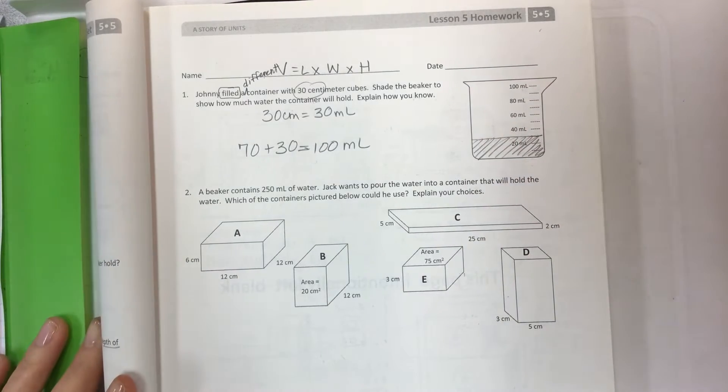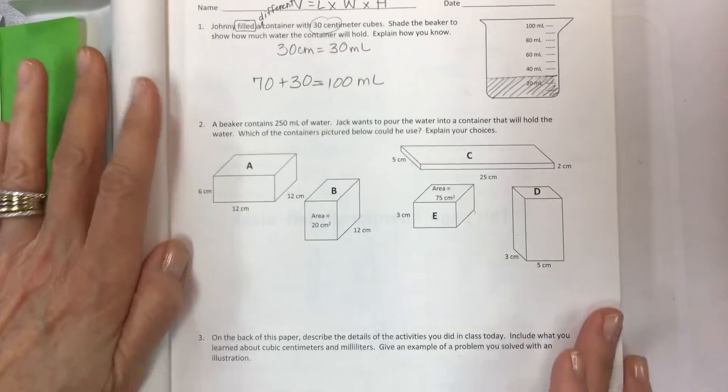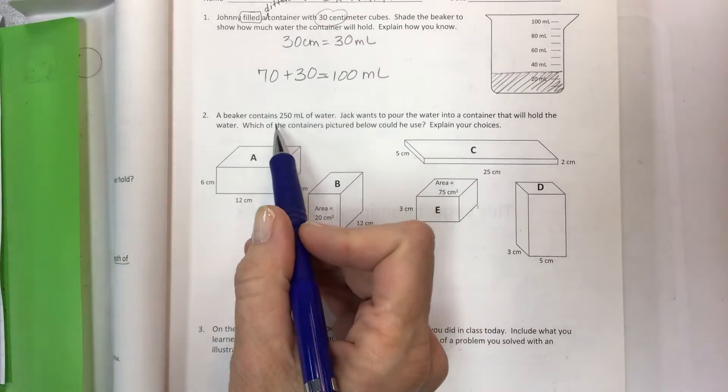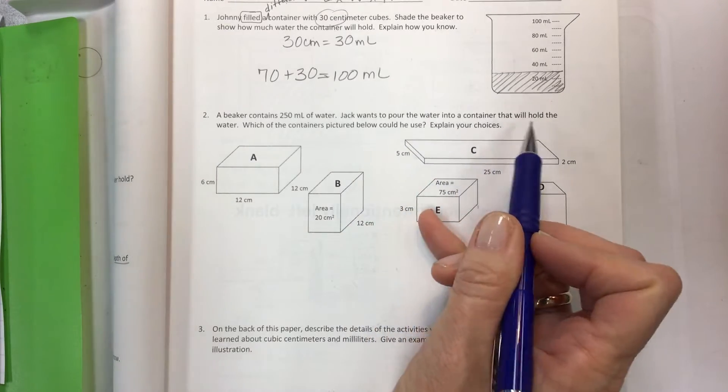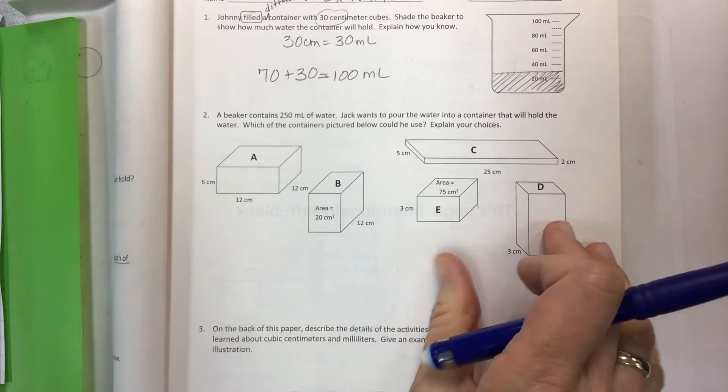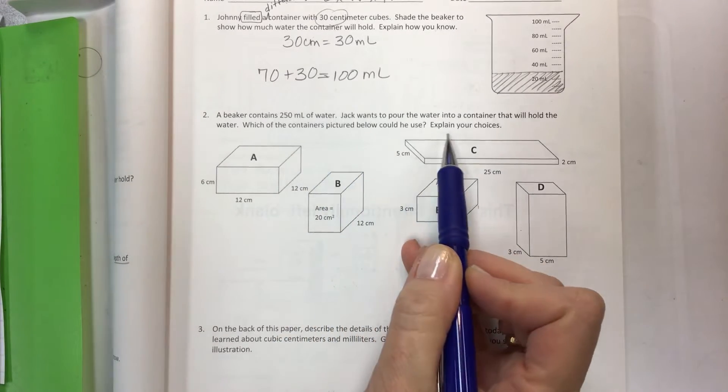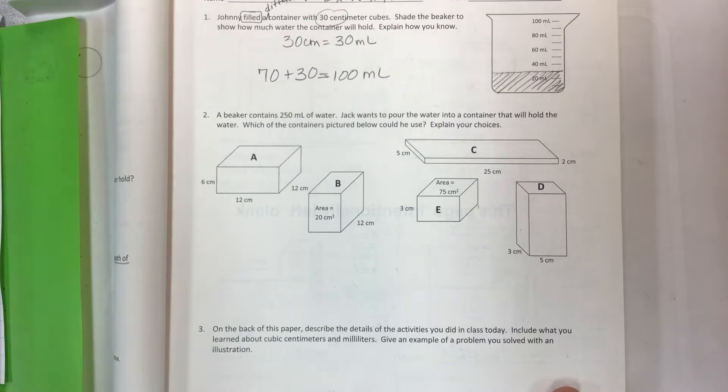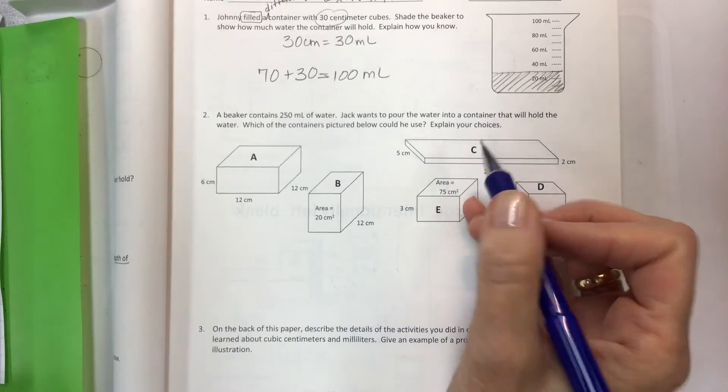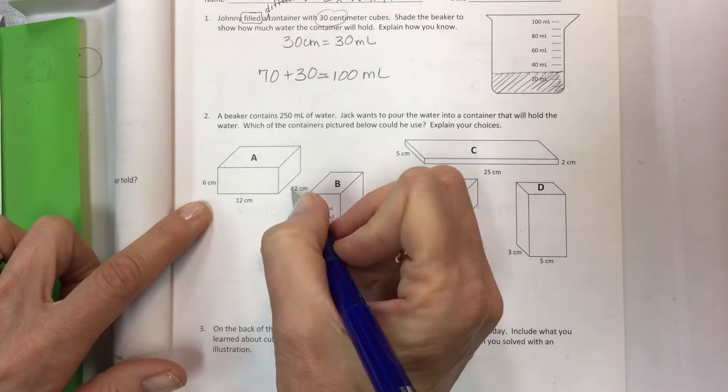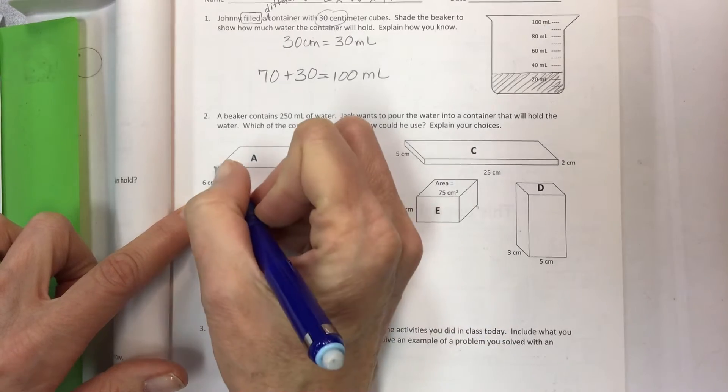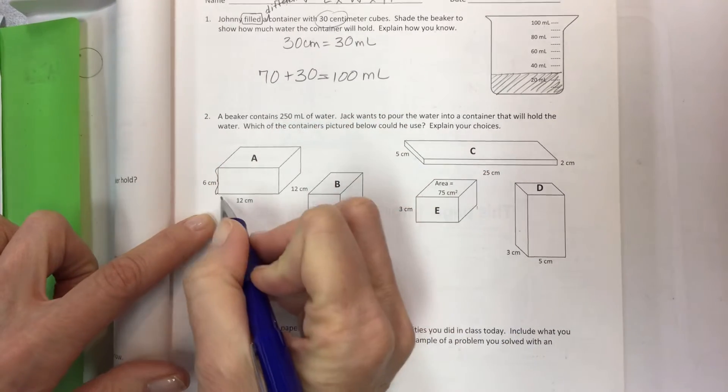Now moving on to number two - a beaker contains 250 milliliters of water. Jack wants to pour the water into a container that will hold the water. Which of the containers pictured below could he use and then you have to explain your choices. Now your explanation is going to be in the math, and you're going to write too big, too small, just right with your Goldilocks method. What we have here is the length width and height, sometimes hard to determine.